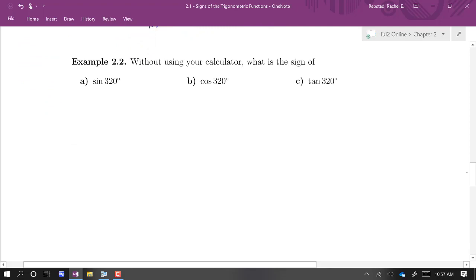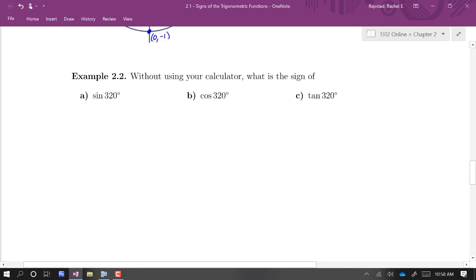We know a bit about, at least we can tell what the sign, like S-I-G-N, whether it's positive or negative, of these trig functions, just by knowing what quadrant it's in. So this says, without using our calculator, what is the sine of 320 degrees, cosine of 320 degrees, tangent of 320 degrees.